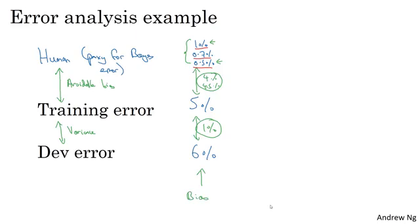Now, let's look at a second example. Let's say your training error is 1% and your dev error is 5%. Then again, it doesn't really matter. It seems a bit academic whether the human-level performance is 1% or 0.7% or 0.5%, because whichever of these definitions you use,